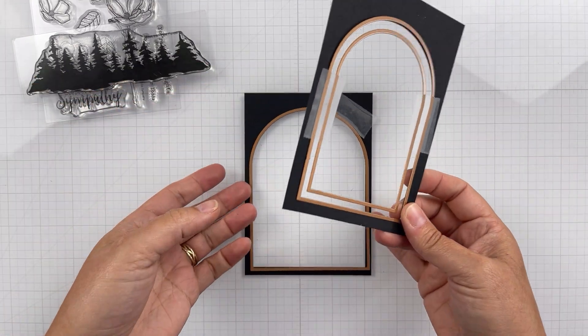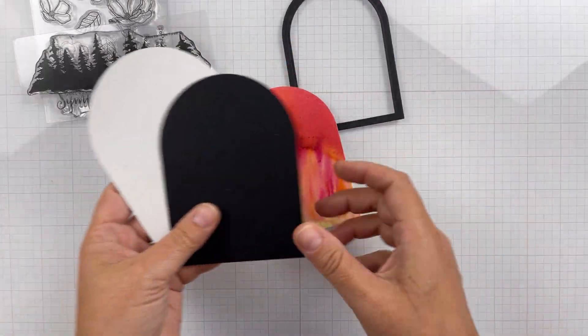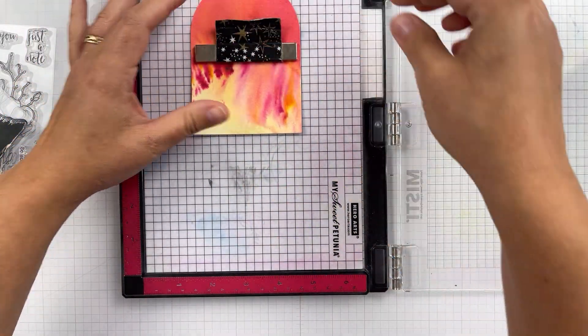And I cut everything. These are the frames. I made a frame to go around, and then I just cut all the arch pieces for layering.